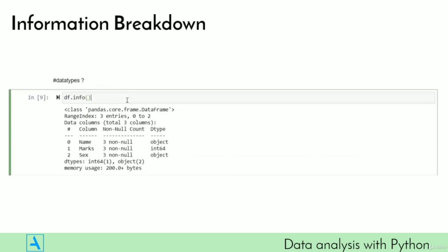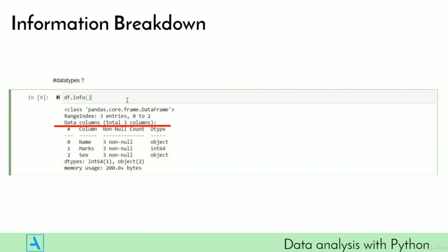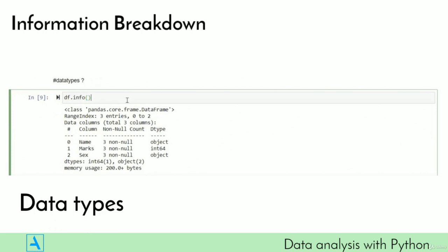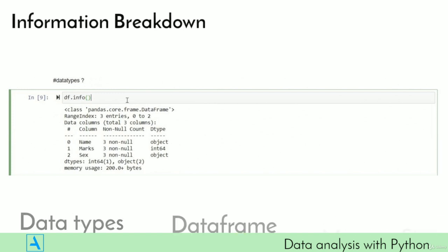We can also call df.info(). This gives you a well-structured information summary of your DataFrame — from the index range to column names, how many non-null values exist in each column, the data type of each column, a breakdown of all data types present, and the memory size the DataFrame is currently holding. It's a wealth of information, especially when working with large datasets.